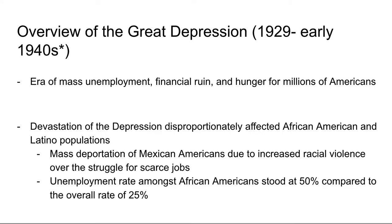The 1929 start: while the stock market crash does not directly cause the Great Depression, it was a contributing factor — that's why we put 1929 as the early start. How would you define the Great Depression at a 10,000-foot view? It's an era of massive unemployment, financial ruin, and hunger for millions of Americans. People lost entire life savings, land, houses — basically everything — and were struggling day-to-day to feed families and meet basic human needs like shelter, food, clothing, and water.